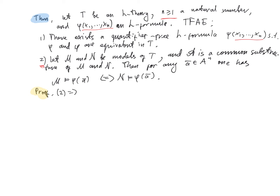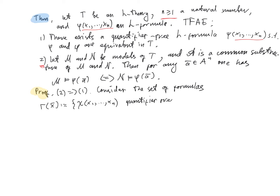Next we show the converse implication 2 implies 1. Consider the set of formulas Gamma of x-bar, defined to consist of all formulas of the form chi of x1 through xn that are quantifier-free L-formulas such that T implies that for all x1 through xn, phi implies chi. So Gamma is the set of all L-formulas without quantifiers that are implied by phi in T.